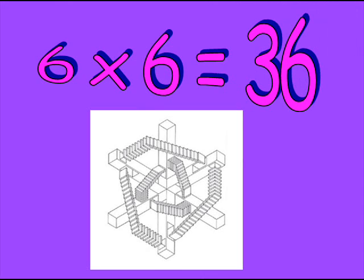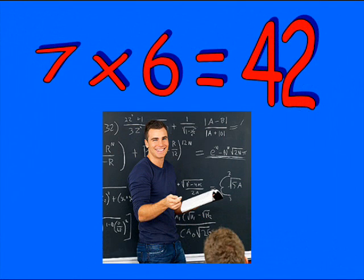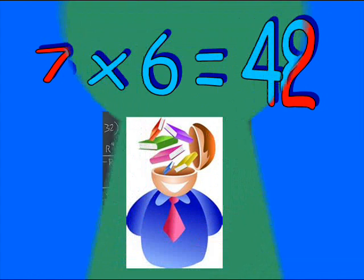Six sixes are thirty-six. As the pattern clearly predicts. Seven sixes are forty-two. Ask your maths teacher and they'll say it's true.